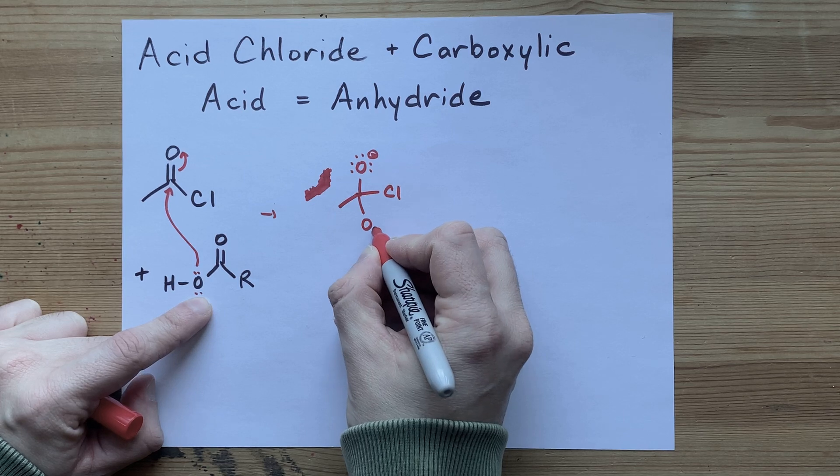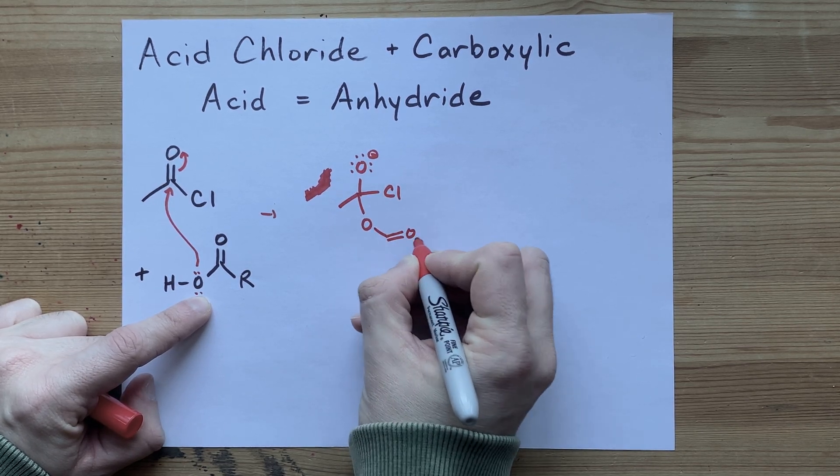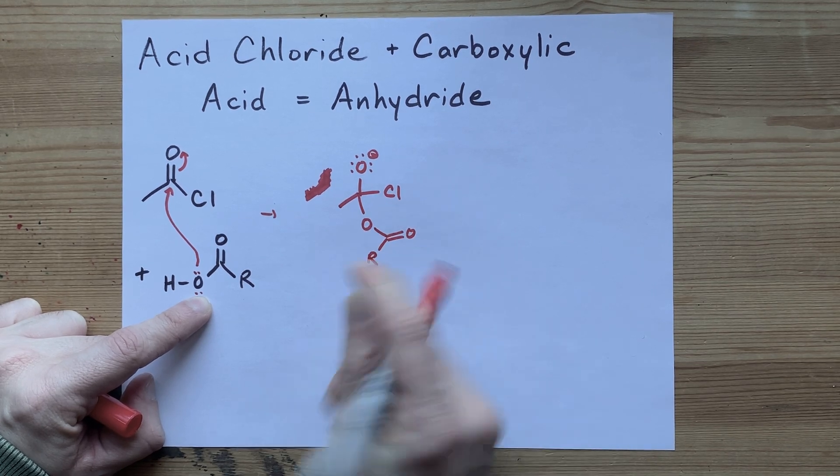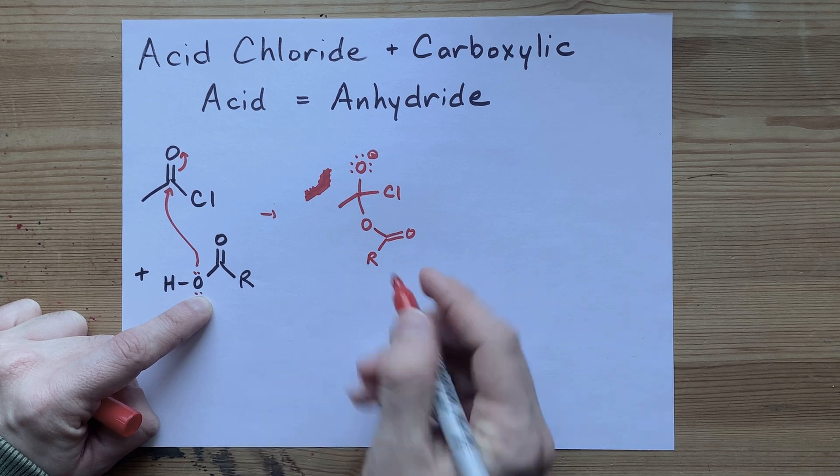Carefully copy out the bond from oxygen to carbon, the double bonded oxygen on that carbon, and the rest of the R group, however long or short that might be, of the carboxylic acid.